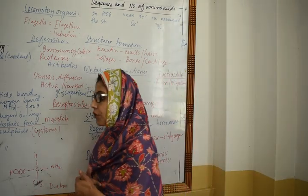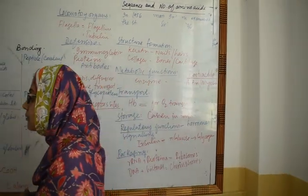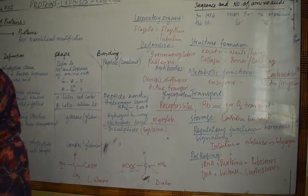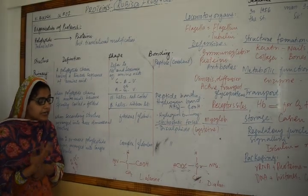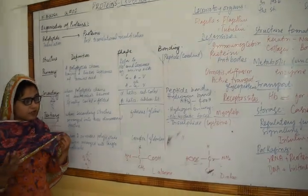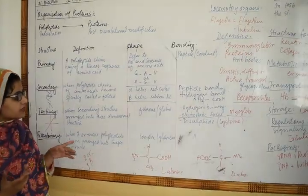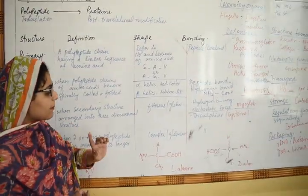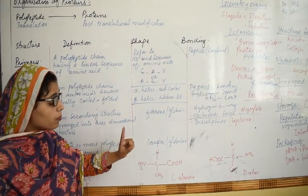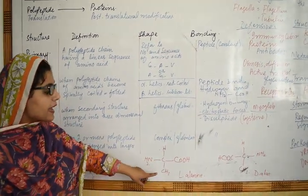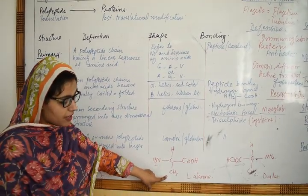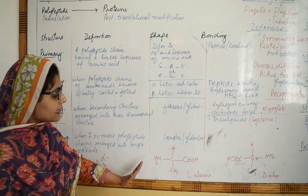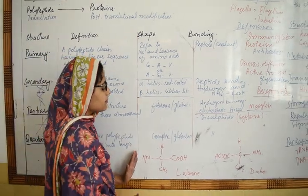One last important point: just as our body uses D-type carbohydrates, you should remember that our body produces and uses L-type amino acids. L-type amino acids are the ones used in biological systems.